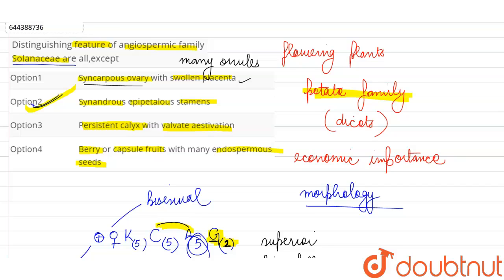Because the stamens are epipetalous but they're not synandrous, they're not fused with each other, they are free.